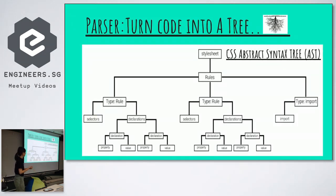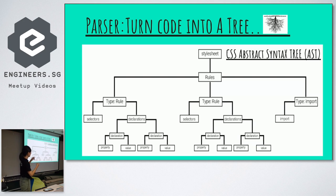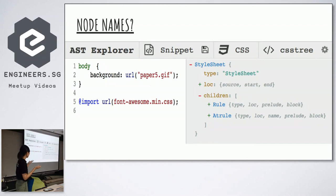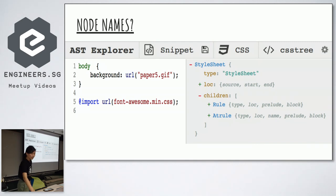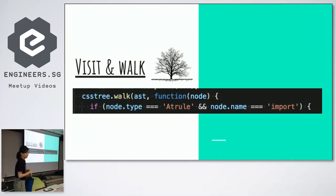What these parsers do is turn the source code into a syntax tree, where each node represents an object in the source code. We can then visit any of the nodes by specifying their types and names. Here's a CSS example — I can retrieve the file or CSS file by visiting the nodes, and this is how I would write code to detect those dependencies.